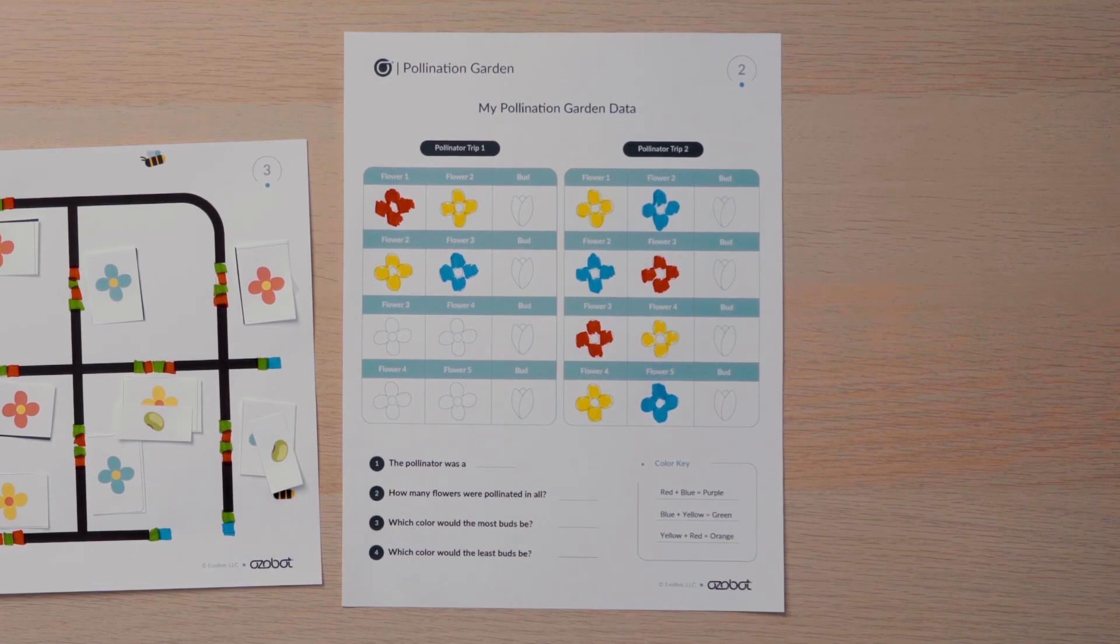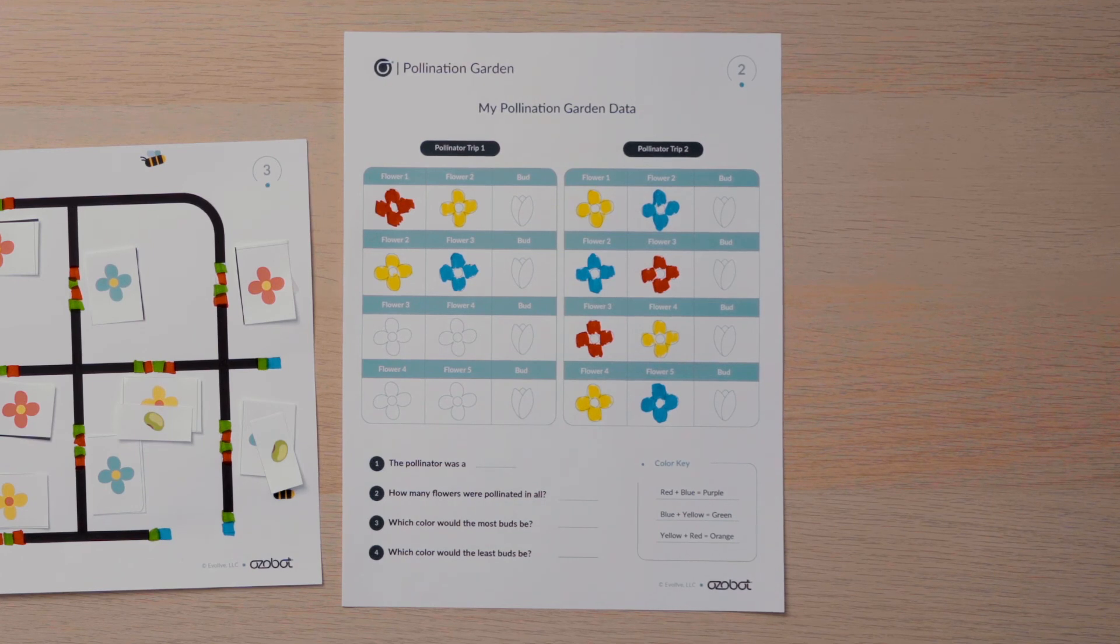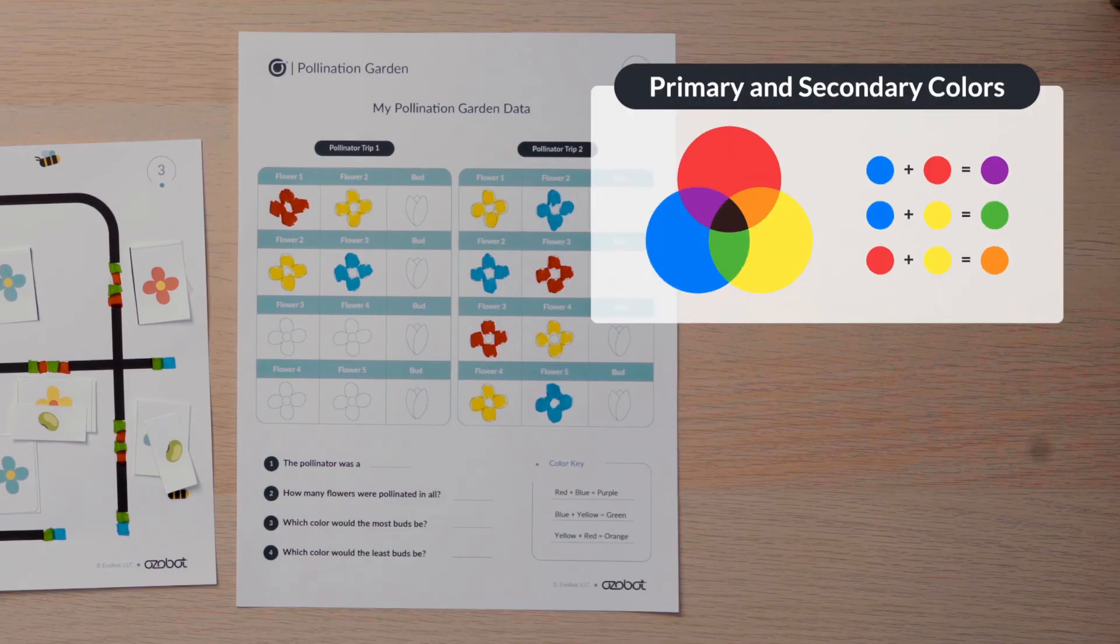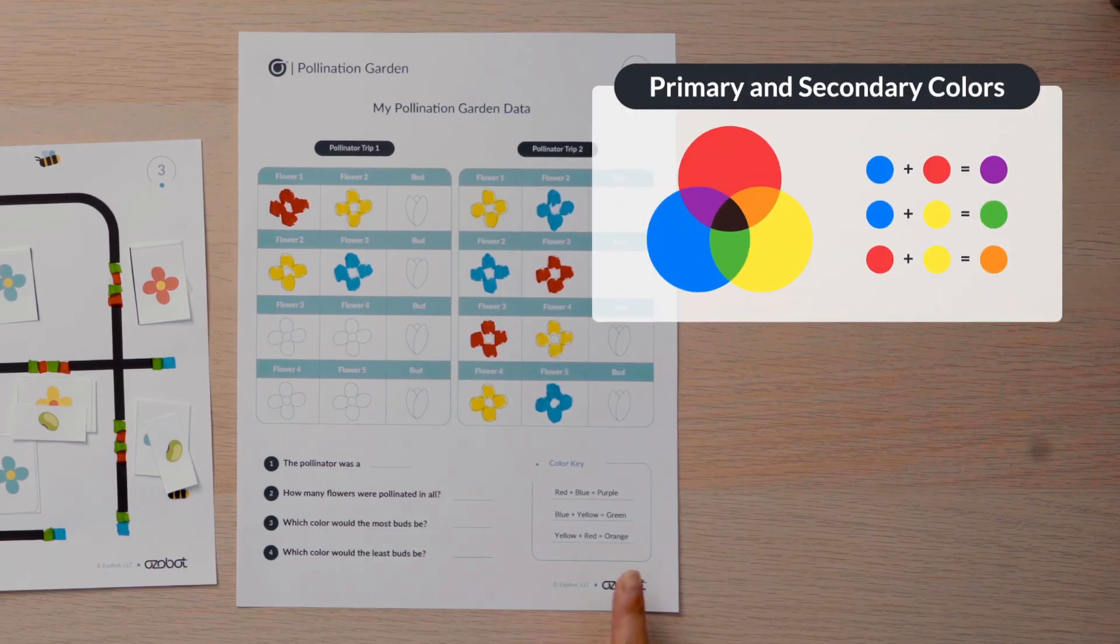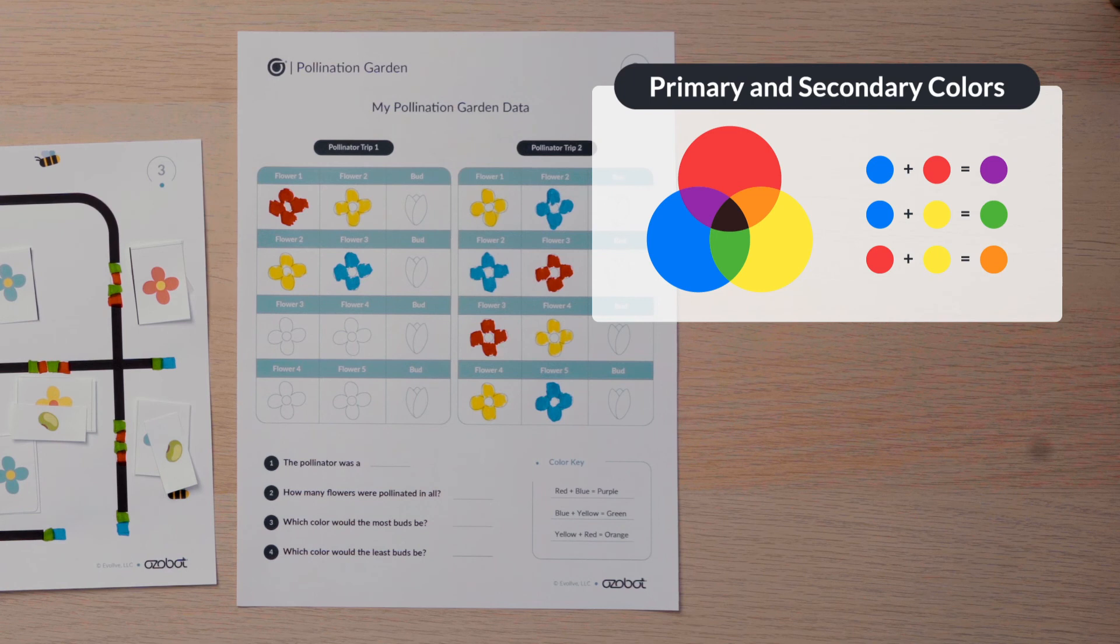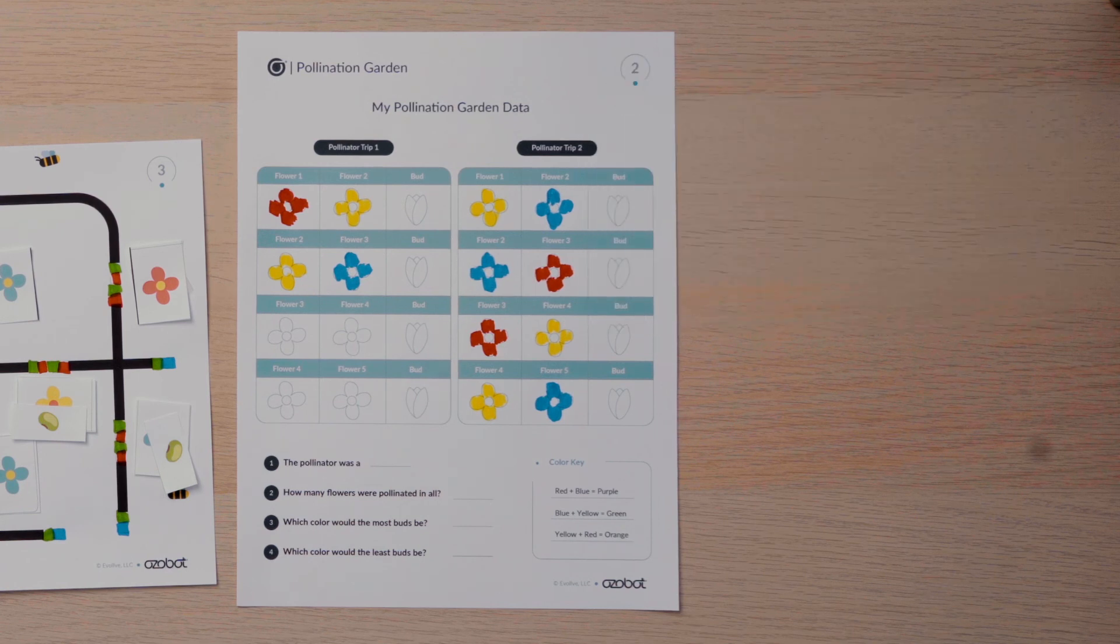In my trip one data chart, the first flower visited was red and the second flower was yellow. I can predict that the bud in my garden would be orange using what I know about primary and secondary colors. I will use the color key to predict the color on the rest of the buds.